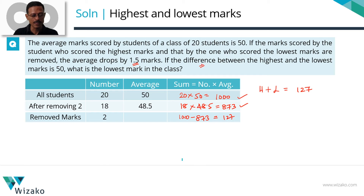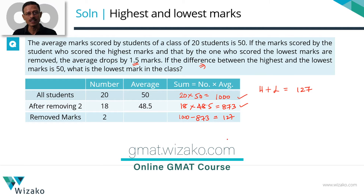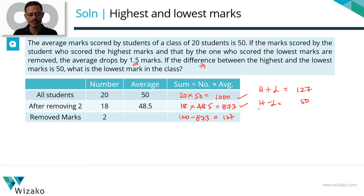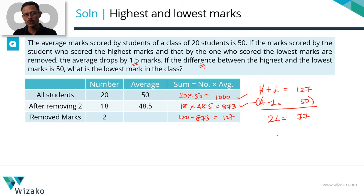We plug in the last bit of information: the difference between the highest and the lowest marks is equal to 50, so H minus L equals 50. We have two equations, two variables — simple straightforward linear equations to solve. We need to find L. Subtracting the second equation from the first, H cancels out. L minus of minus L gives 2L. 127 minus 50 equals 77, so 2L equals 77, and L equals 77 divided by 2, which is 38.5. The lowest mark in this class is 38.5.